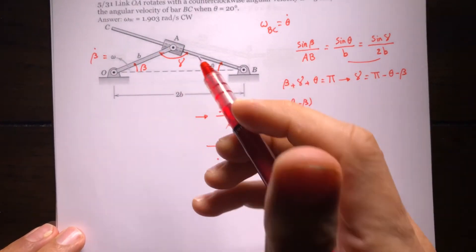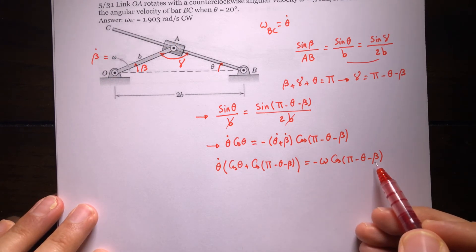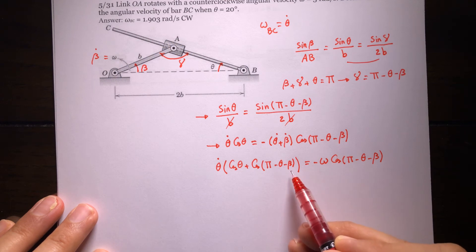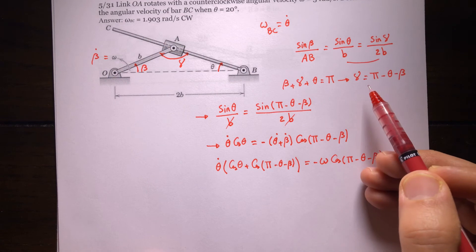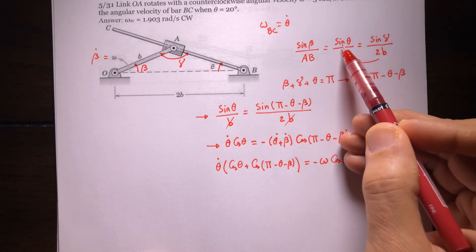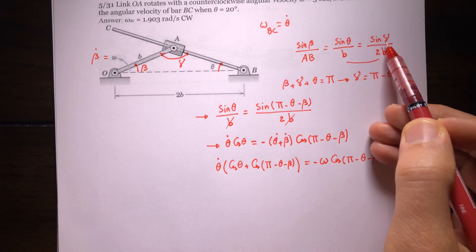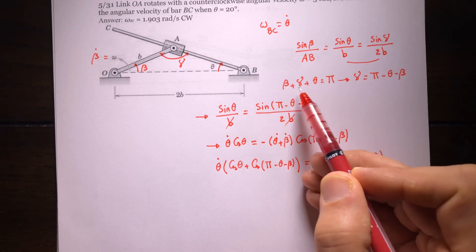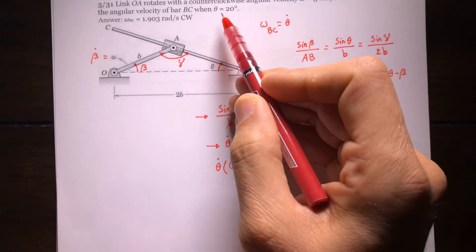Omega is given and theta is given, so if I can find beta, I can solve for theta-dot. To find beta: theta is given as 20 degrees — plug that into the law of sines equation to find gamma, then use beta plus gamma plus theta equals 180 degrees to find beta. Once beta is known and theta equals 20 degrees and omega equals 3 radians per second are substituted, we can find theta-dot.